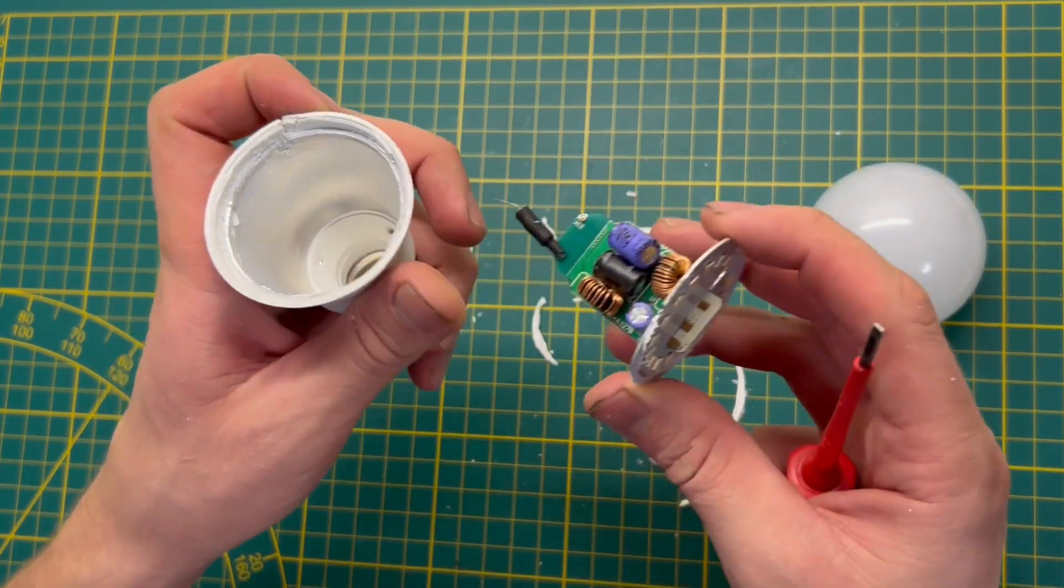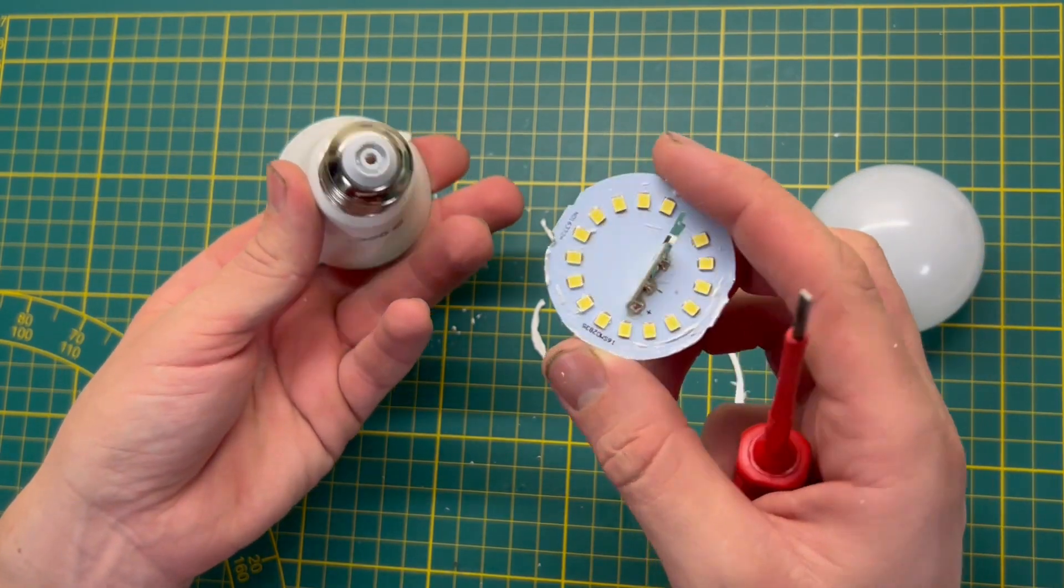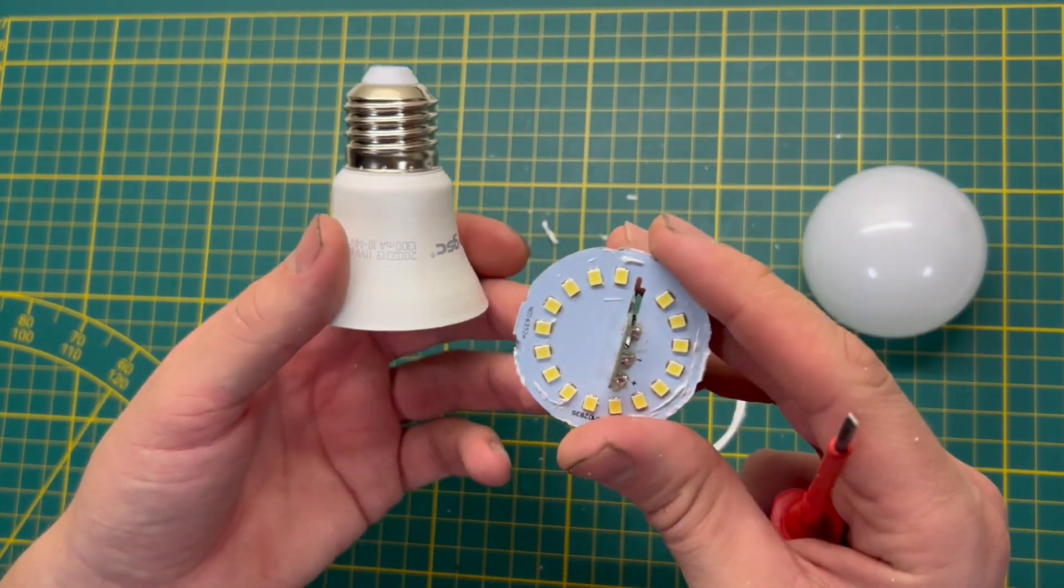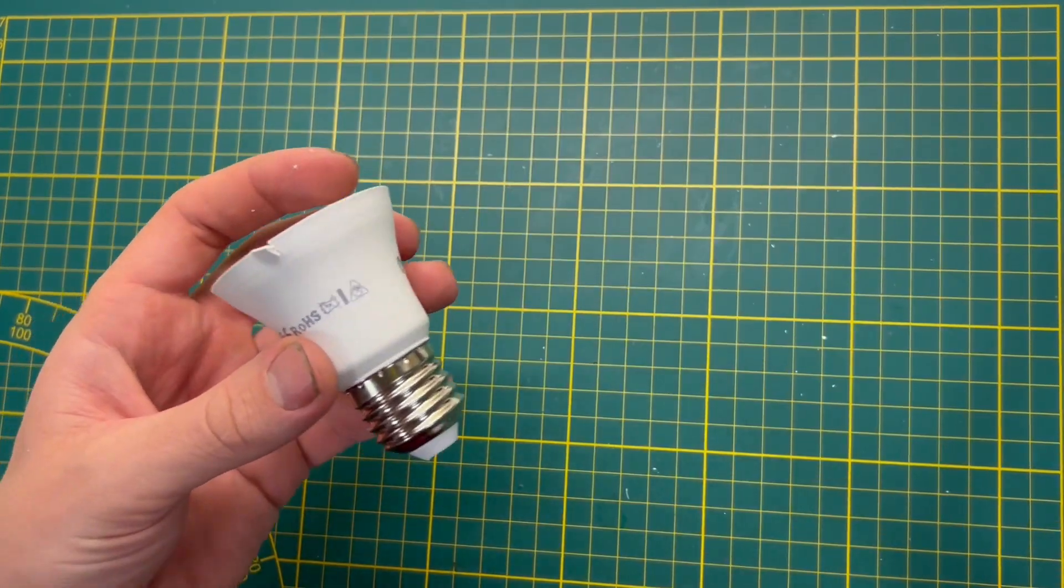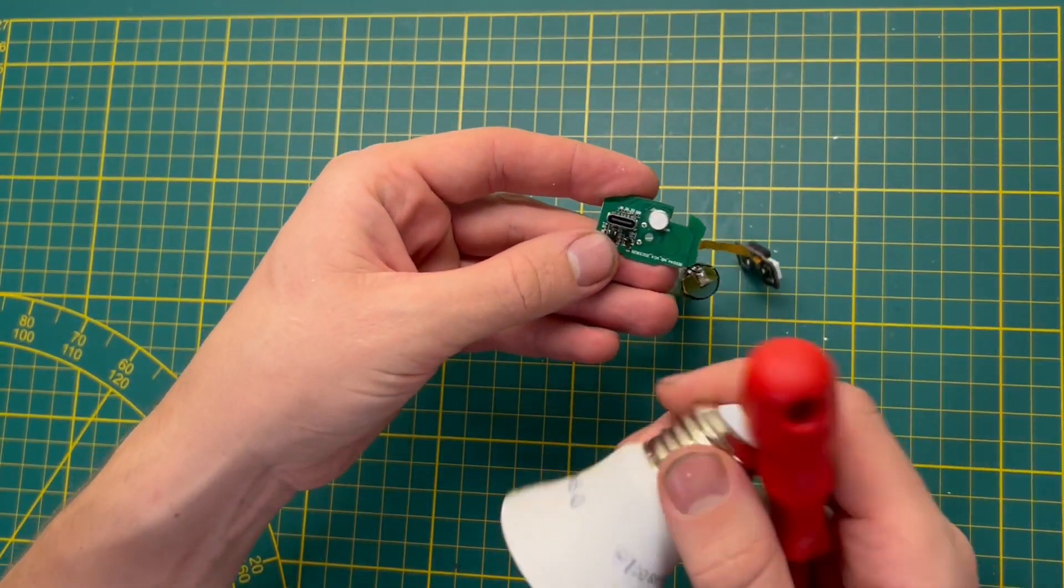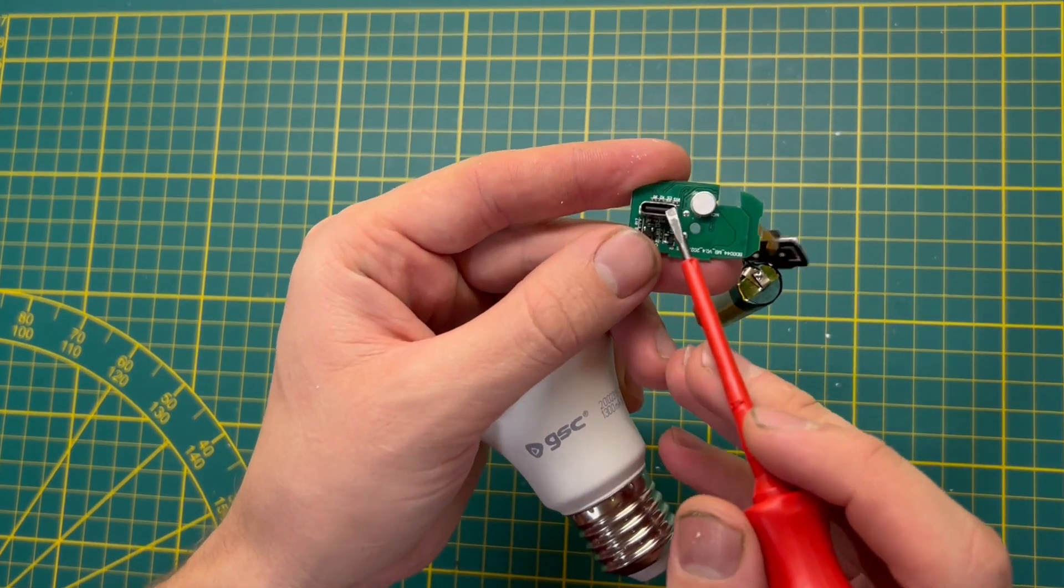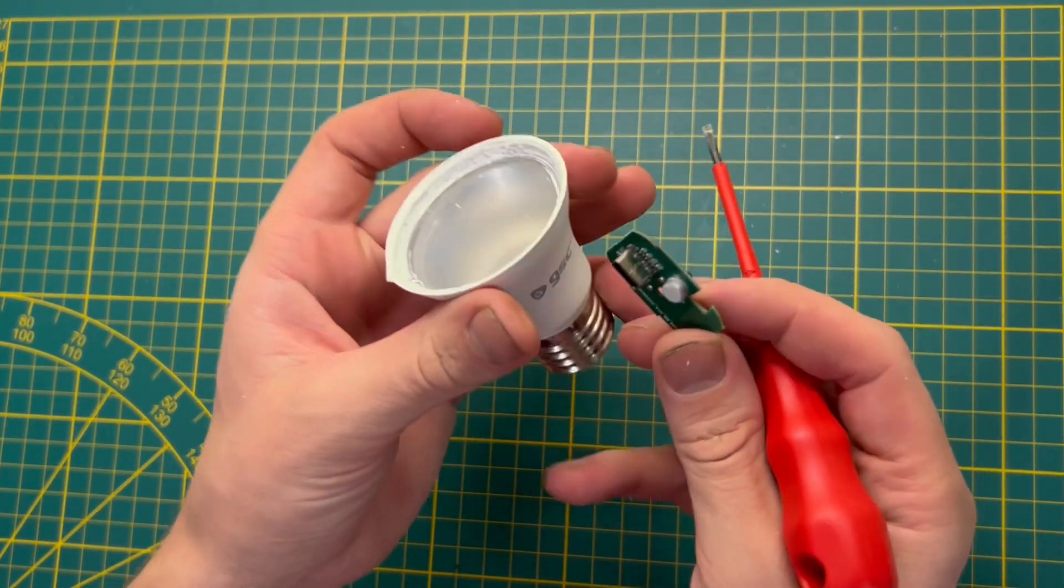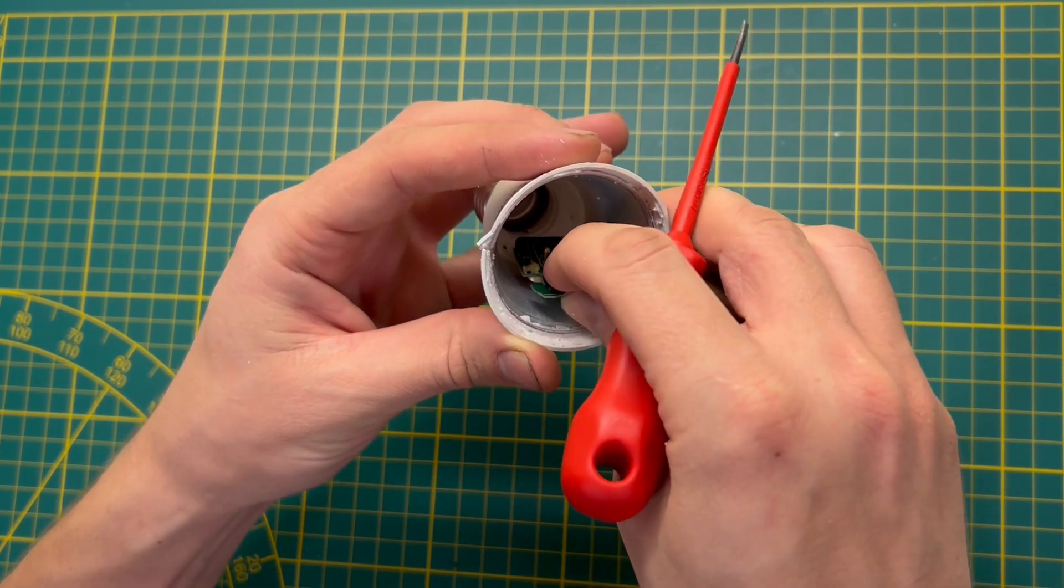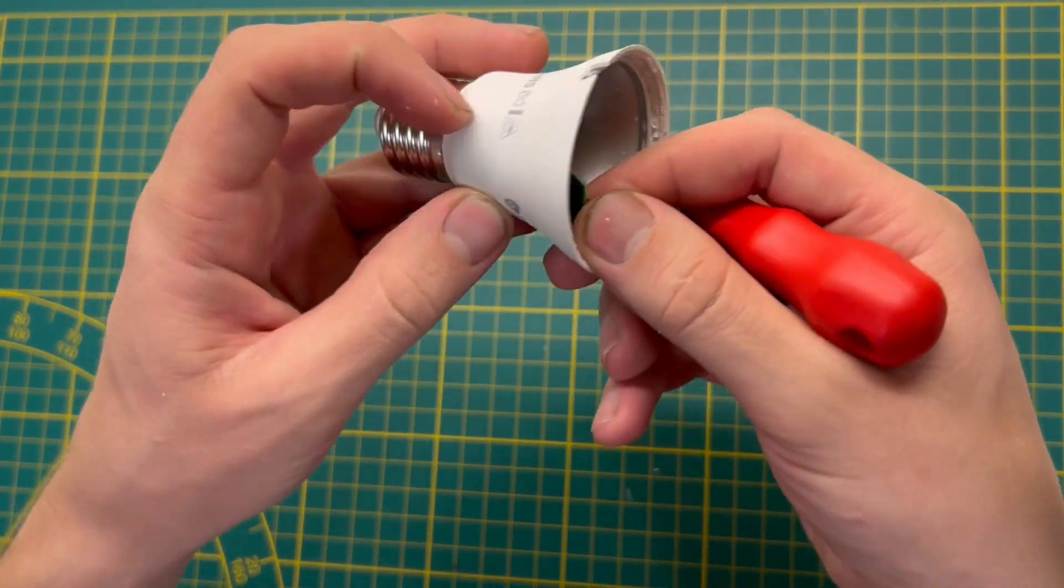Okay, our bulb is dismantled. Now we are going to the next step. Now we need a grinding machine to make a hole somewhere here for this Type C connector.